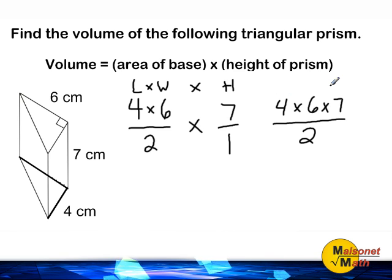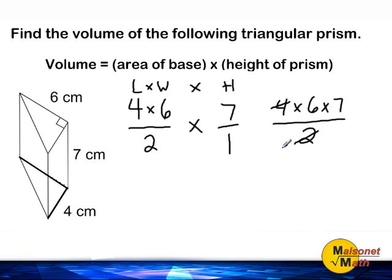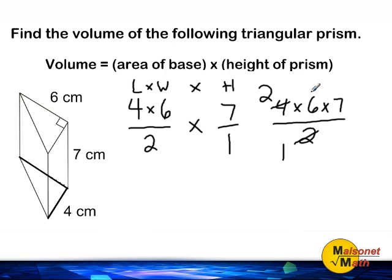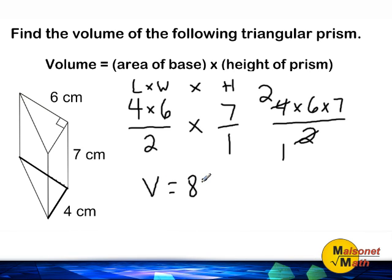We can multiply all the numbers in our numerator and divide by 2, or we can cancel the 2 with the 4. That reduces the 2 to a 1 and the 4 to a 2. Because our denominator is now 1, we multiply the remaining numbers: 2 times 6 is 12, and 12 times 7 is 84. So the volume of our triangular prism is equal to 84 cubic centimeters.